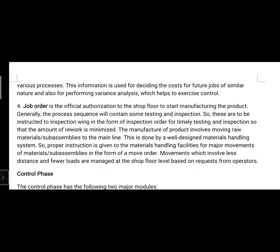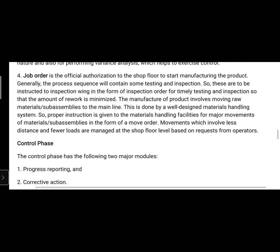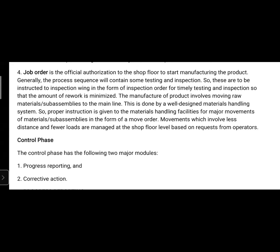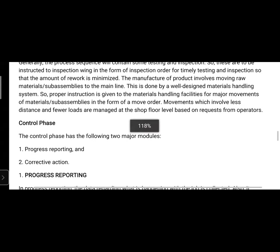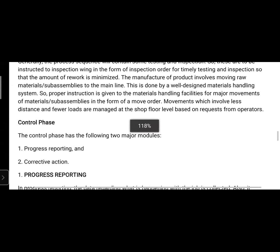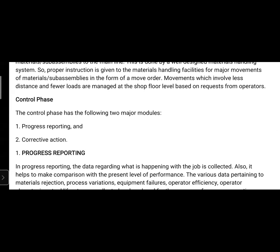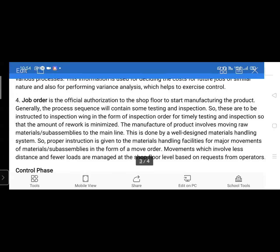A job order is an official authorization to the shop floor to start manufacturing. The process sequence includes testing and inspection instructions in the form of an inspection order to minimize rework. Manufacturing also involves moving raw material sub-assemblies to the main line via a well-designed material handling system. A move order gives proper instructions to material handling facilities for major material movements, while minor movements are handled at the shop floor level based on operator requests.